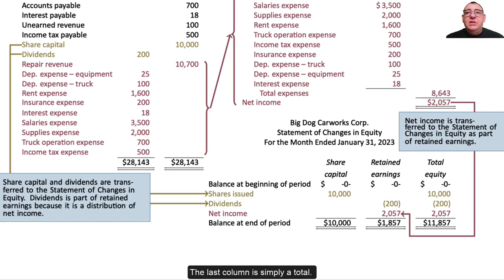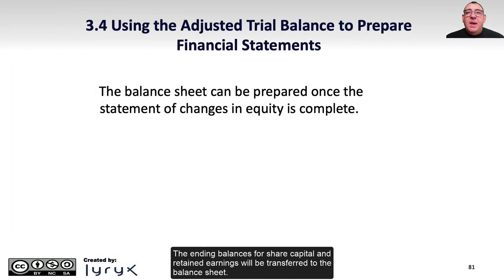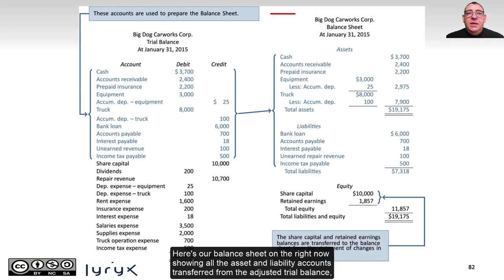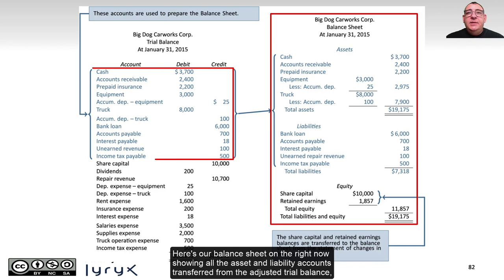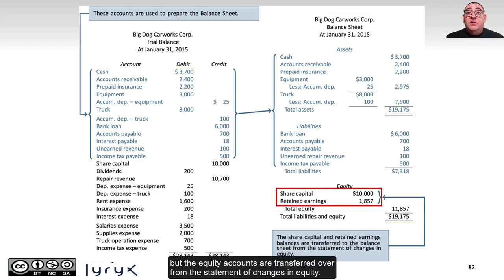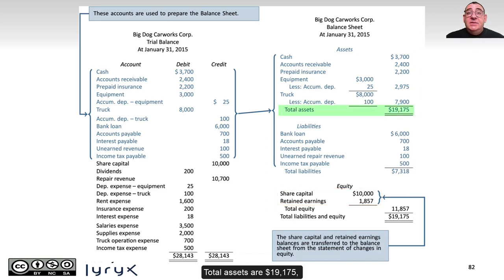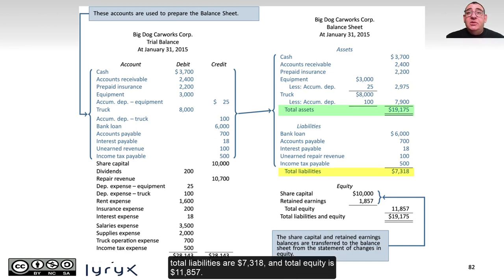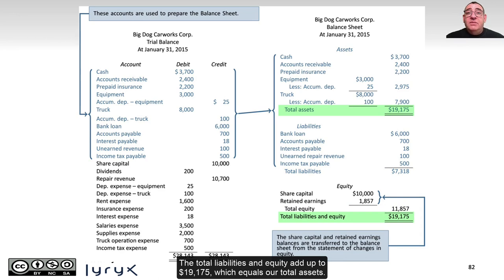The last column is simply total. The ending balances for share capital and retained earnings will be transferred to the balance sheet. Here's our balance sheet on the right, now showing all of the asset and liability accounts transferred from the adjusted trial balance, but the equity accounts are transferred over from the statement of changes in equity. Total assets are $19,175, total liabilities are $7,318, and total equity is $11,857. The total liabilities and equity add up to $19,175, which equals our total assets.